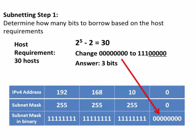This is important. Step 1: how many bits to borrow based on the host requirements? Currently in our subnet mask, we have 8 host bits in the host portion. Having 8 bits in the host portion means the number of hosts is 2 to the 8th power, or 256 hosts, minus 2 — reserving the first address as the network address and the last address as the broadcast address — giving 254 usable hosts. Since we only need 30 hosts, we can change the number of zeros in the host portion from 8 zeros to 5 zeros.